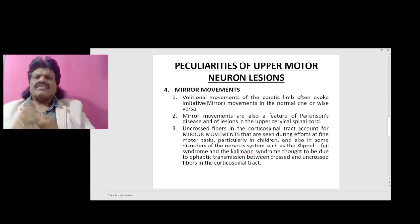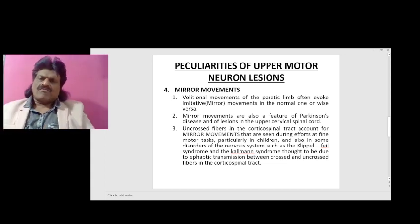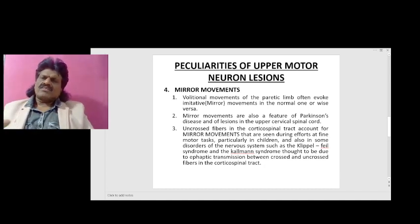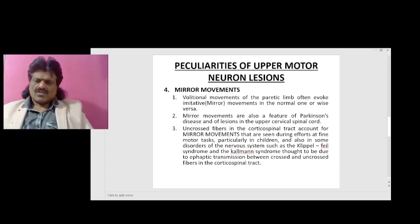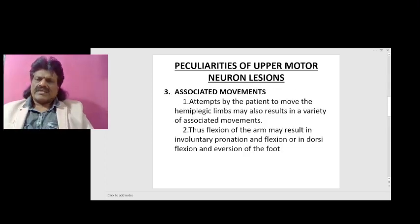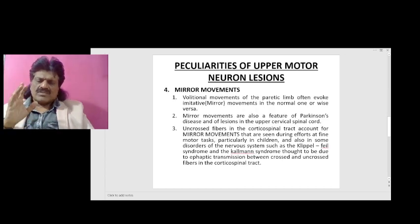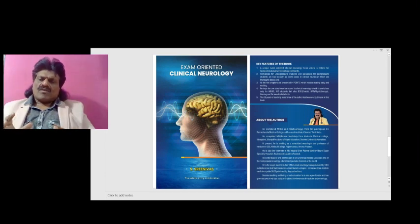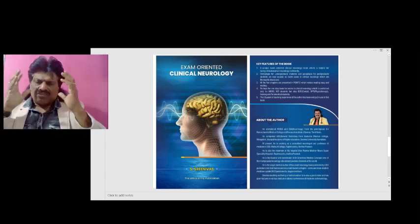So mirror movements are a very interesting and peculiar phenomenon seen in upper motor neuron lesions. To summarize the peculiarities of upper motor neuron lesions: automatisms or synkinesias, associated movements, and mirror movements.